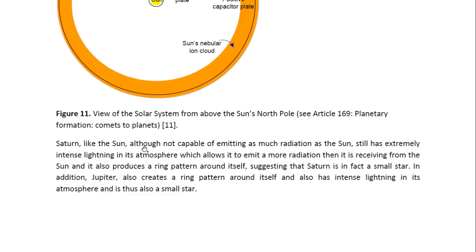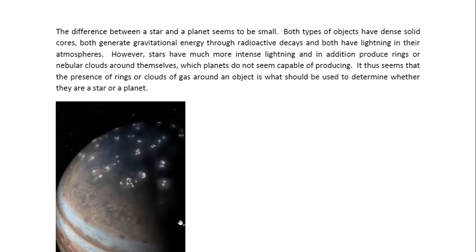Saturn, like the sun, although not capable of emitting as much radiation as the sun, still has extremely intense lightning in its atmosphere, which allows it to emit more radiation than it is receiving from the sun. And it also produces a ring pattern around itself, suggesting that Saturn is in fact a small star. In addition, Jupiter also creates a ring pattern around itself and also has intense lightning in its atmosphere, and is thus also a small star.